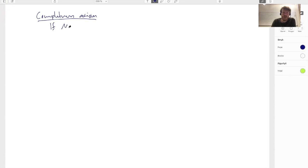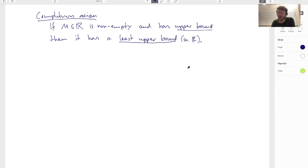So what does it say? It says if M is a subset of the real numbers, it's non-empty so it has some point inside of it at least, and it has an upper bound, then it has a least upper bound. You can point out that this least upper bound is a real number. So least upper bound in R. Usually people omit saying this but it's kind of understood.